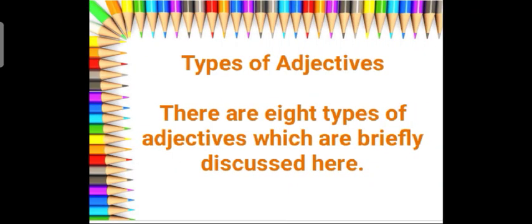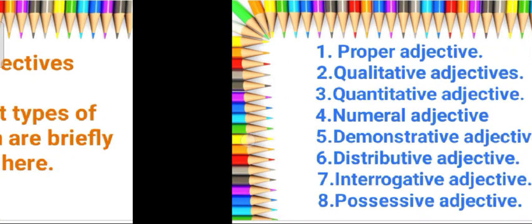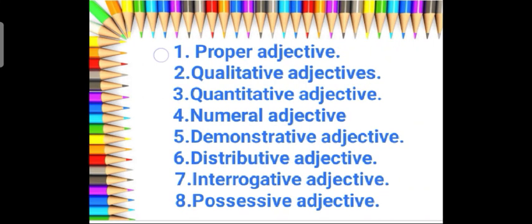Basically, there are eight types of adjectives, which are briefly discussed here in this video: proper adjective, qualitative adjective, quantitative adjective, numeral adjective, demonstrative adjective, distributive adjective, interrogative adjective, and possessive adjective.